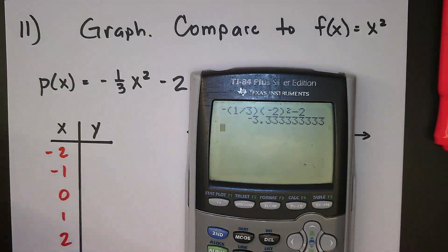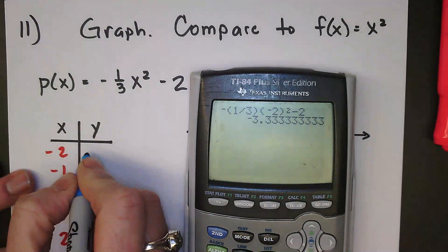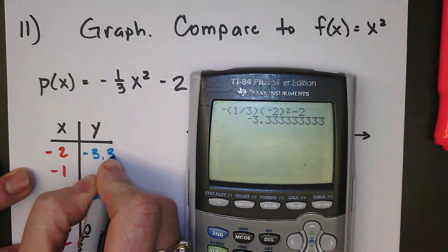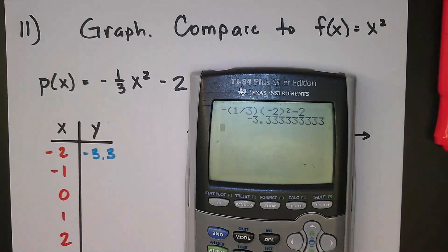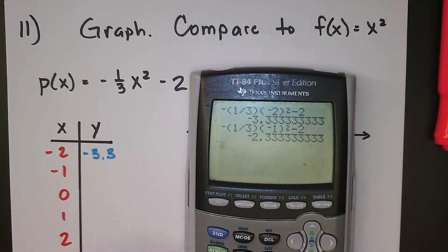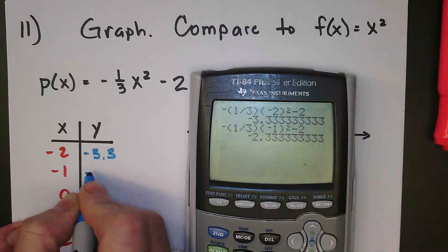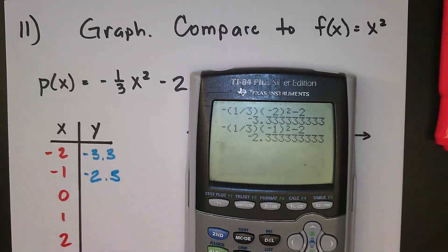So now subtract two. All right, negative 3.3. And we can just round that, we're just graphing to get kind of approximate values. Negative 3 and it's about 0.3. That's technically a third, so if you wanted to write negative 3 and a third, that would be okay too. I'm going to pull the thing back up and I'm just going to change that 2 to a 1, so I'm now inputting negative 1 and I'm going to have about negative 2.3 or negative 2 and a third.